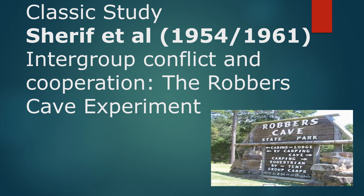So this lesson is going to go through your classic study for social psychology. You will need the big A3 sheet to hand. The study is by Sheriff et al., who looks at intergroup conflict and cooperation using what he calls the Robber's Cave experiment. This is a field experiment that he set up. Make sure you've got your A3 sheets ready and a pen — you're going to need to take down the information throughout the lesson.